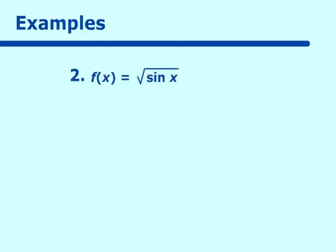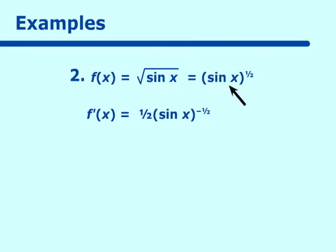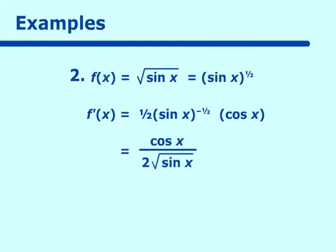Let's try another one. f of x equals the square root of sine x. The outside function is a power function — something to the one-half power — and the inside function is sine x. So f prime of x: we take the derivative of the outside first, giving one-half times whatever is in the parentheses to the negative one-half. Then we go inside and take the derivative of sine, which is cosine. Cleaning this up: cosine x over 2 square roots of sine x.